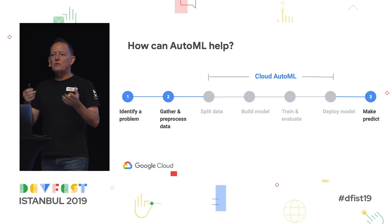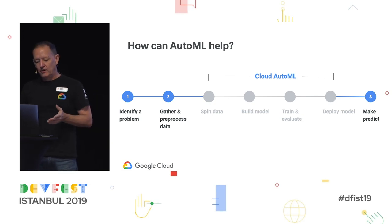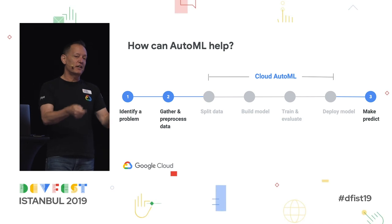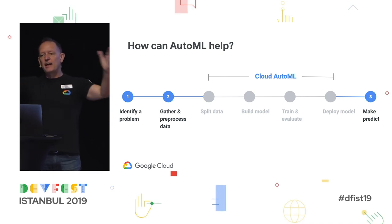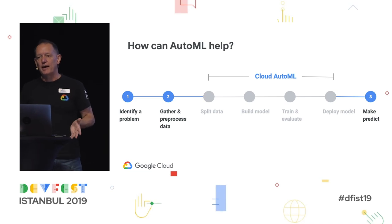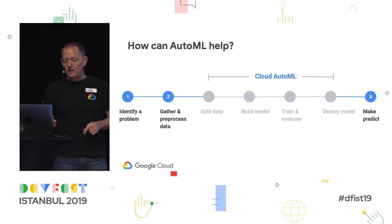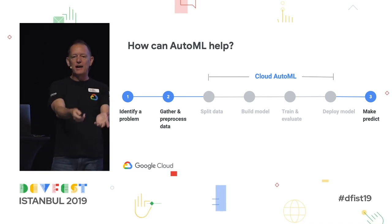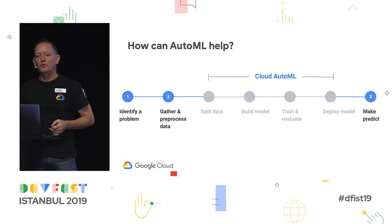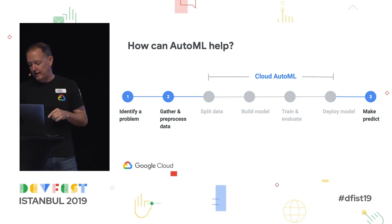AutoML is going to make this a little bit simpler. We still have to identify the problem and collect our data, but all of that model building, training, separating the data — all that gets handled automatically by AutoML. So once you have the data tagged, you upload it, press a button for training, and then you can get predictions. We're going to see an example of that in a minute.